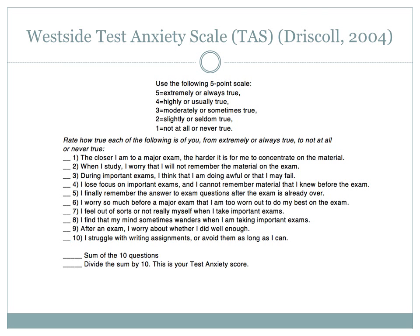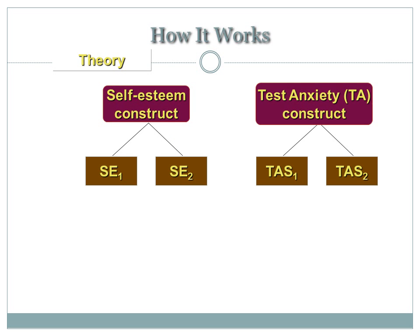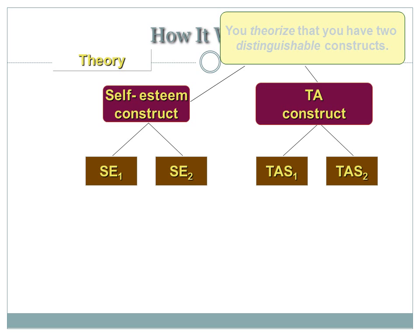Recall the 10-item measure for test anxiety called the Westside Test Anxiety Scale. If we look at two items from this scale — TAS1 and TAS2 — we would argue that these two items for test anxiety should not converge with two items of the self-esteem construct, SE1 and SE2. That would suggest we have discriminant validity.